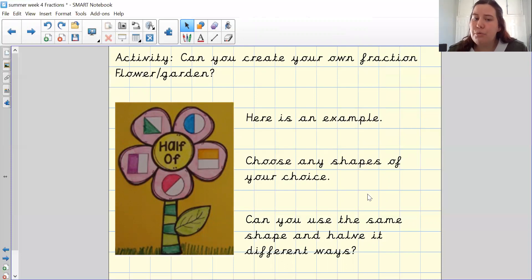So you could choose a range of different shapes like they have or you could choose one shape and then represent it in different ways. Once you've done that, please stick them onto a piece of paper and then you will take a whole picture and upload that onto tapestry for me.